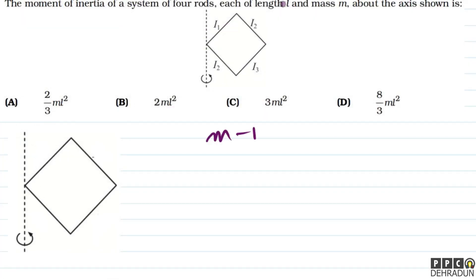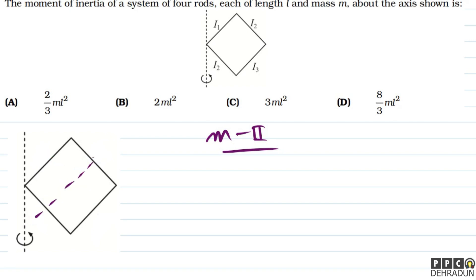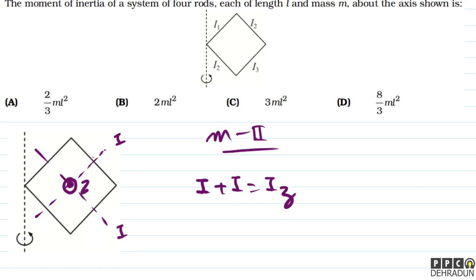अब हम लोग इसी सवाल को solve करने का method number 2 देखेंगे। अगर इस axis के about और इस axis के about moment of inertia कहूँ, तो perpendicular axis theorem की मदद से कह सकते हैं: I + I = Iz। Iz वो Z-axis है जो center से pass करती है और screen के plane के perpendicular है।